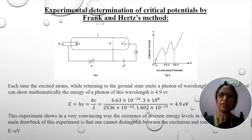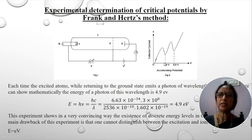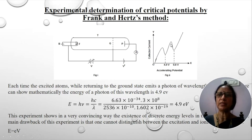From the graph, it is shown that up to a certain voltage, there is no collector current. As the accelerating potential is increased, the collector current goes on increasing. It is found that at around 4.9 volts of accelerating potential, there is a sudden dip in the collector current — note that it becomes minimum, not reaching zero. On further increase of accelerating potential, the collector current increases again, and a second dip occurs at 9.8 volts. From these two values, it is clear that the dips occur at intervals of around 5 volts.